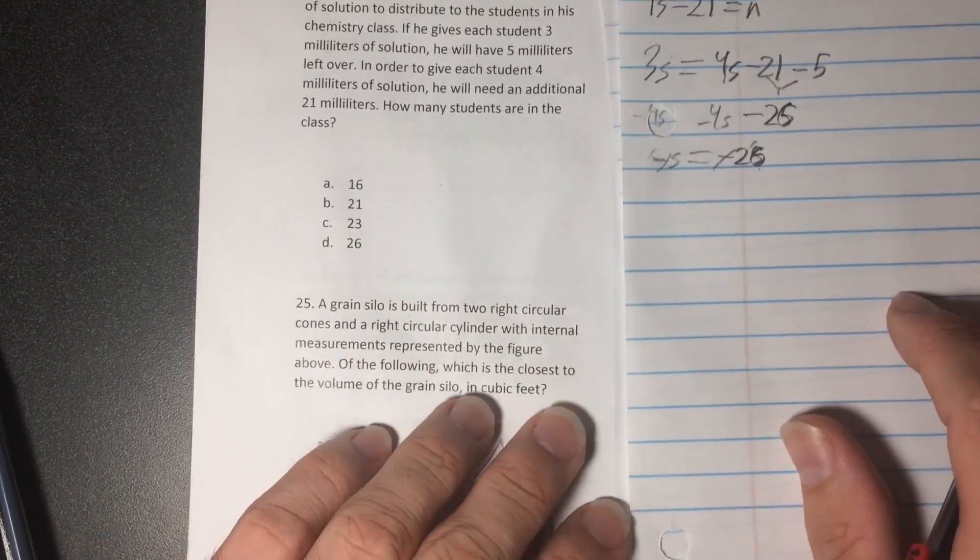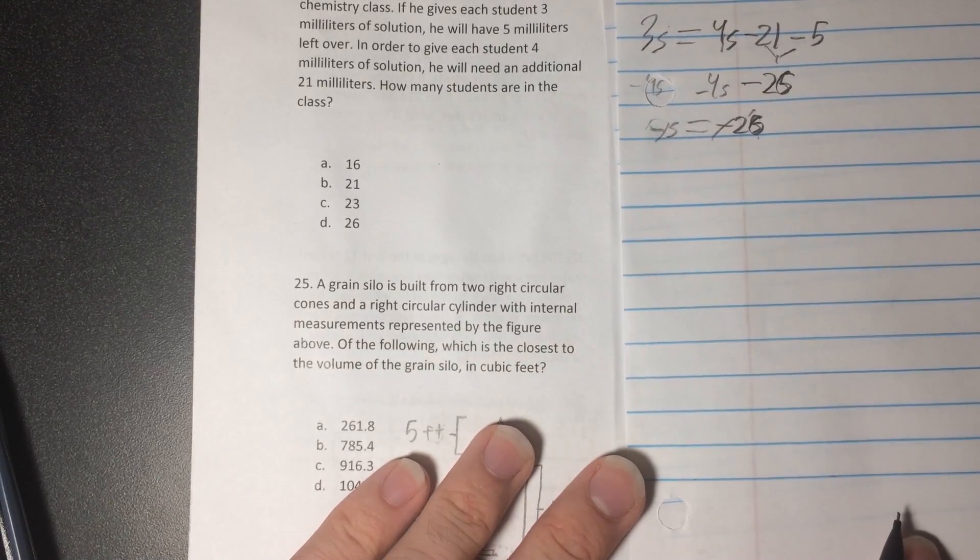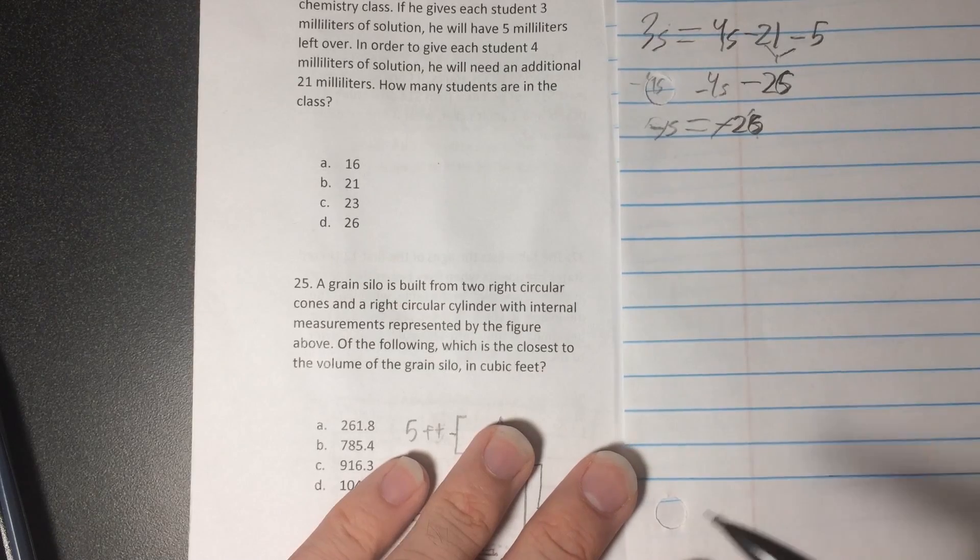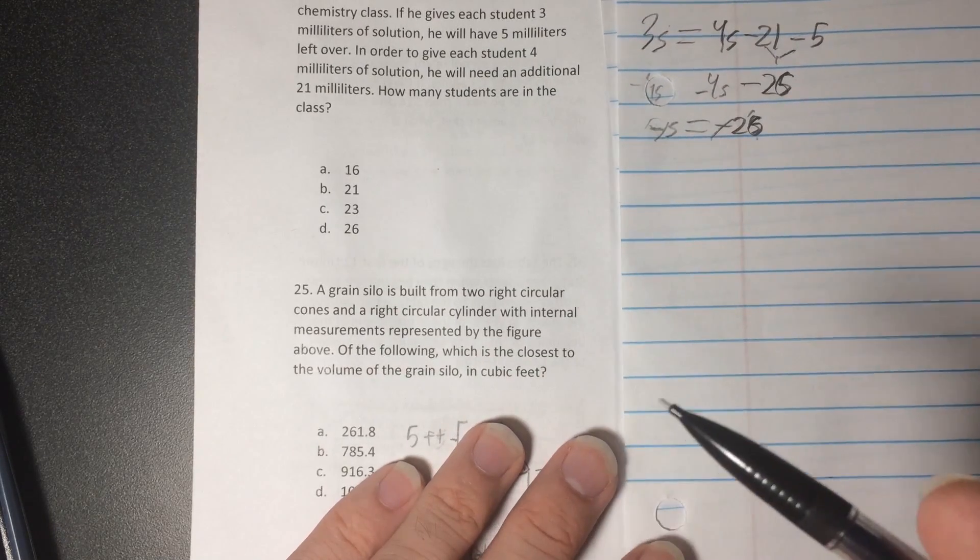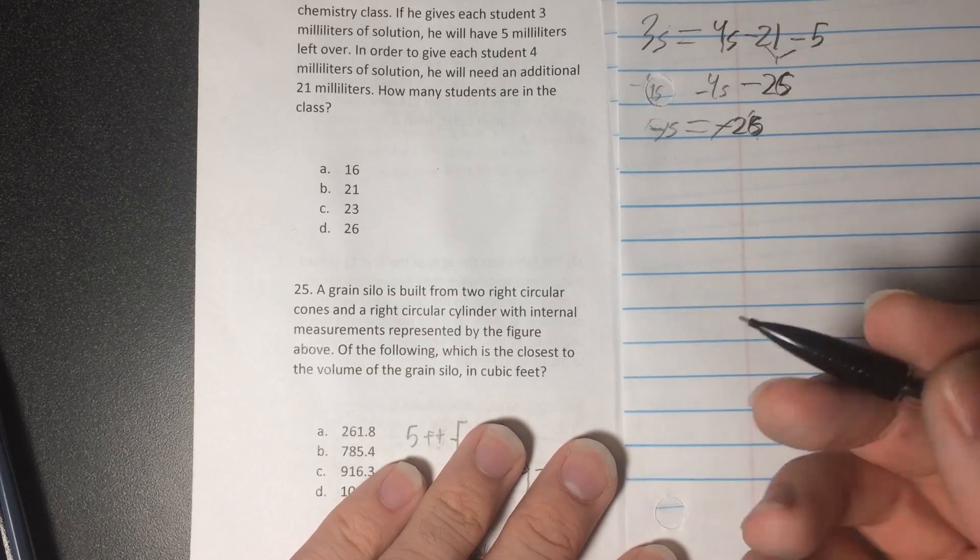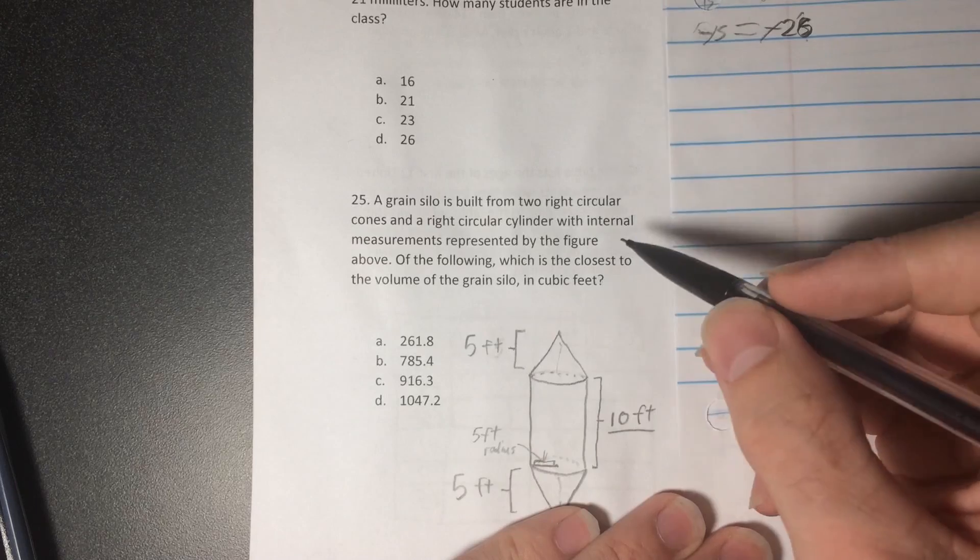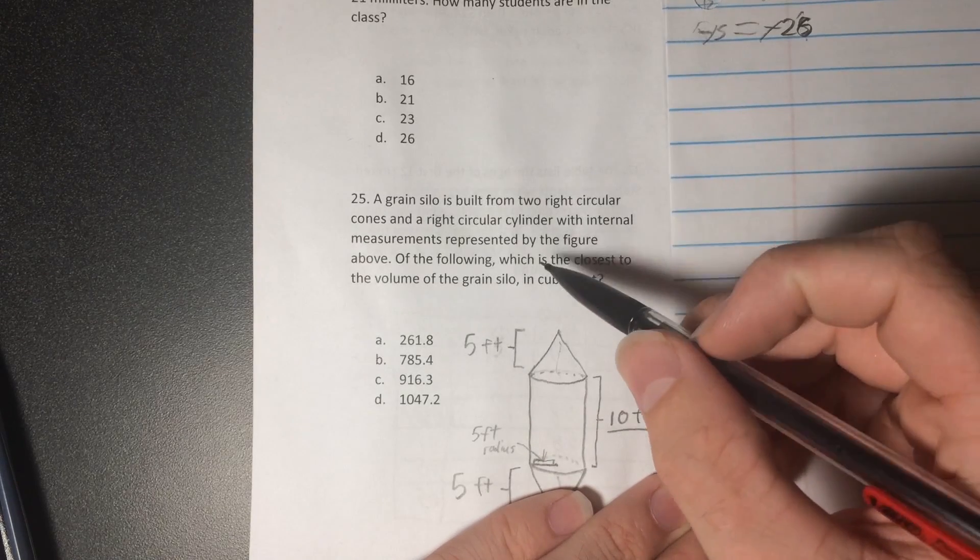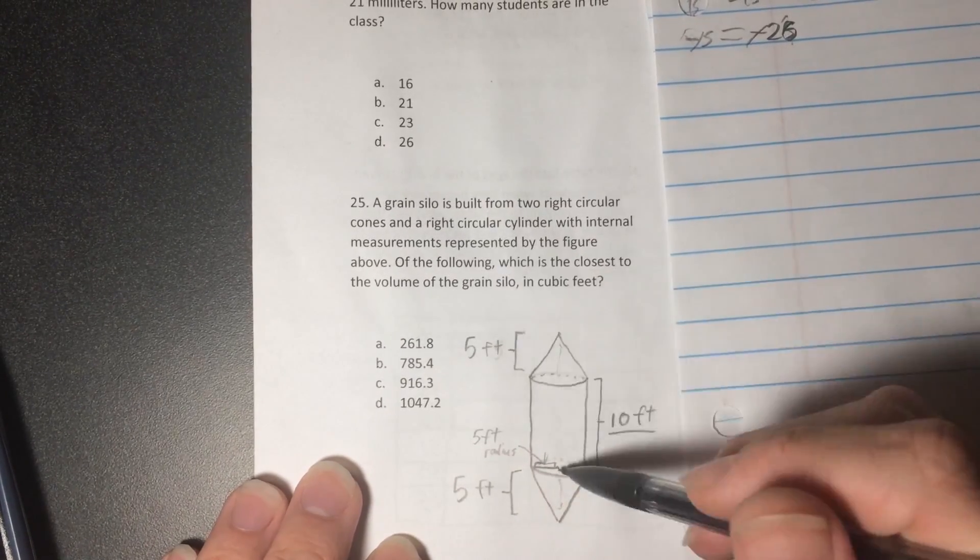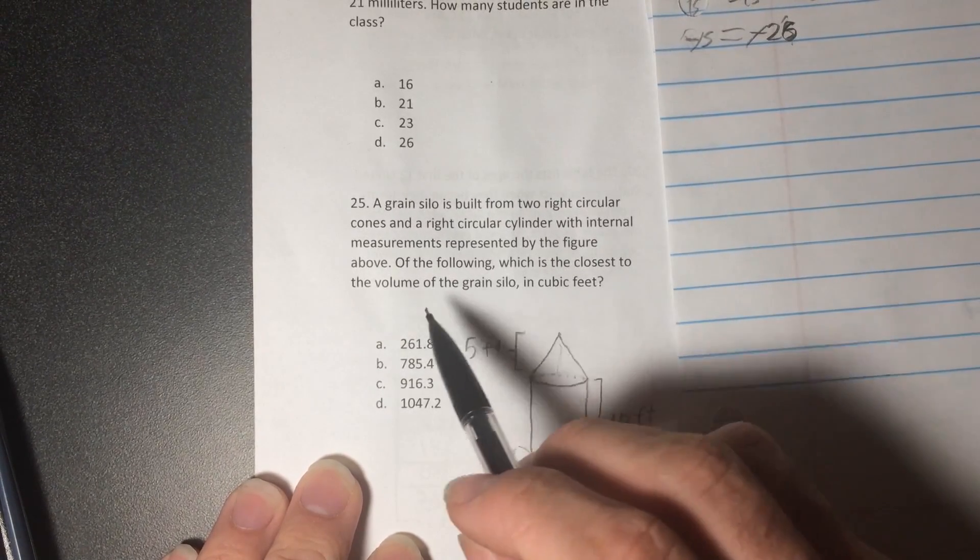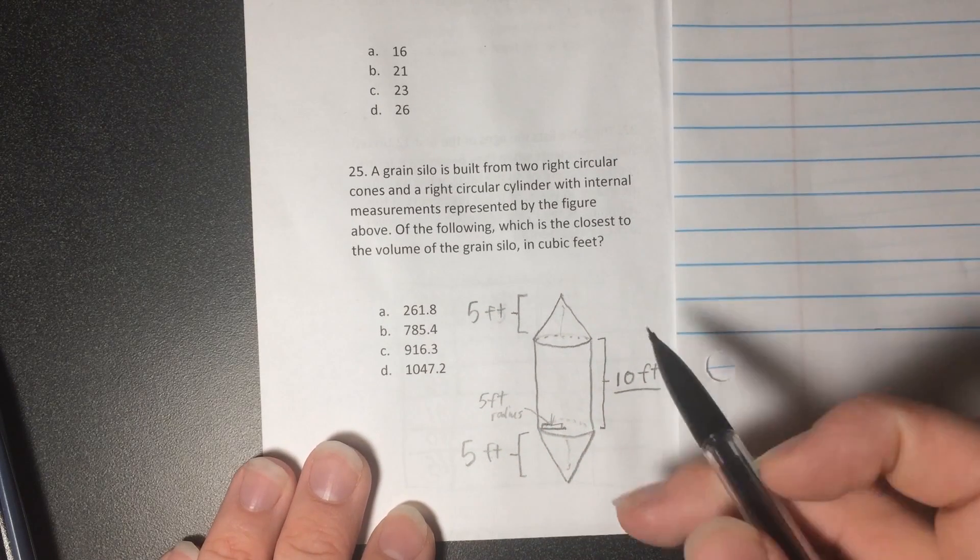Let's move on to the next one. And feel free to pause at any time in the video and just go over what we've been doing again. If you haven't done the problem, do it in your head or do it on a piece of paper before we work it out, because it can really help you to learn where you go wrong and to recognize what you might be missing. So a grain silo is built from two right circular cones and a right circular cylinder with internal measurements represented by this. Of the following, which is closest to the volume of the grain silo in cubic feet.